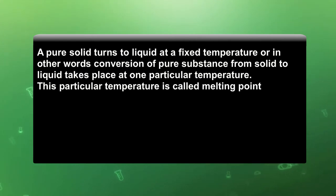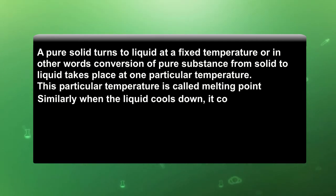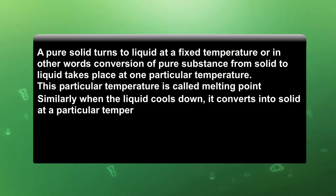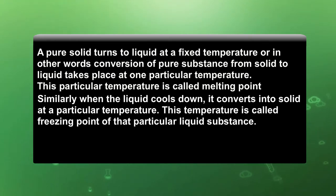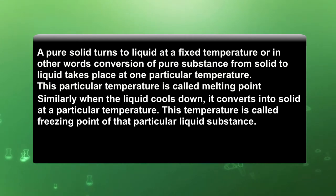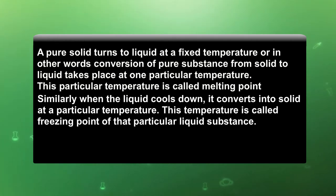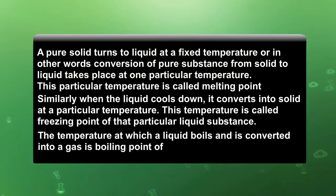For example, if we heat wax, it will melt at a certain temperature — that is known as the melting point. Similarly, when a liquid cools down it converts to solid at a particular temperature called the freezing point. For instance, water placed in a freezer will freeze to ice at a particular temperature — the freezing point. The temperature at which a liquid boils and converts into gas is known as the boiling point.